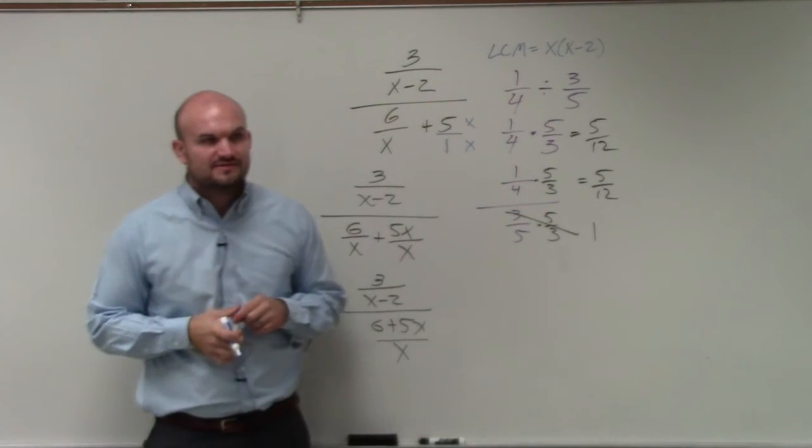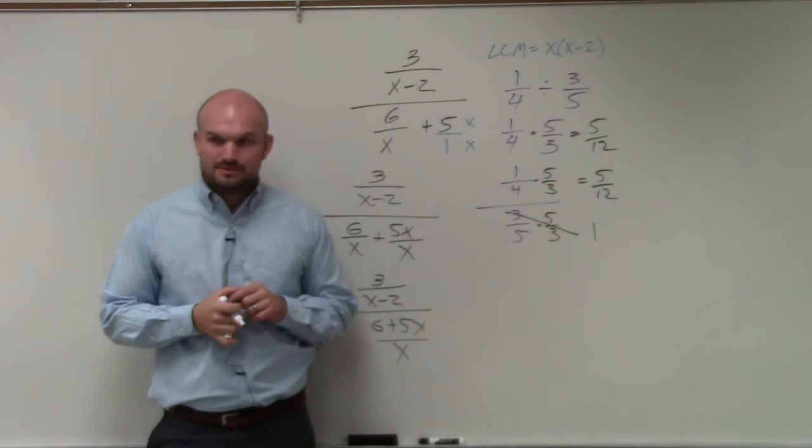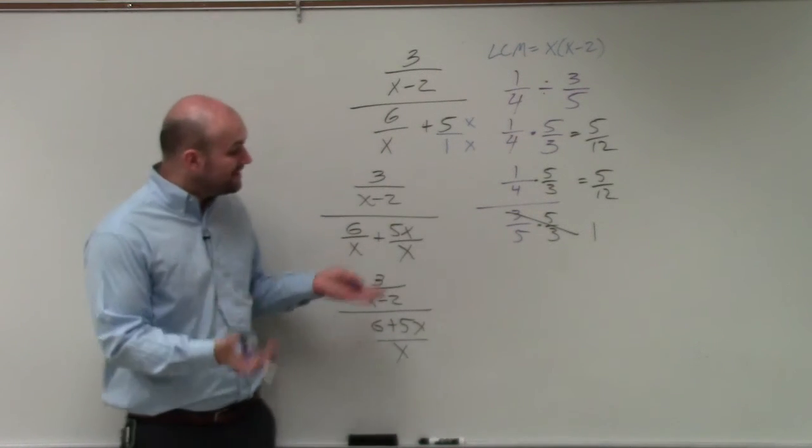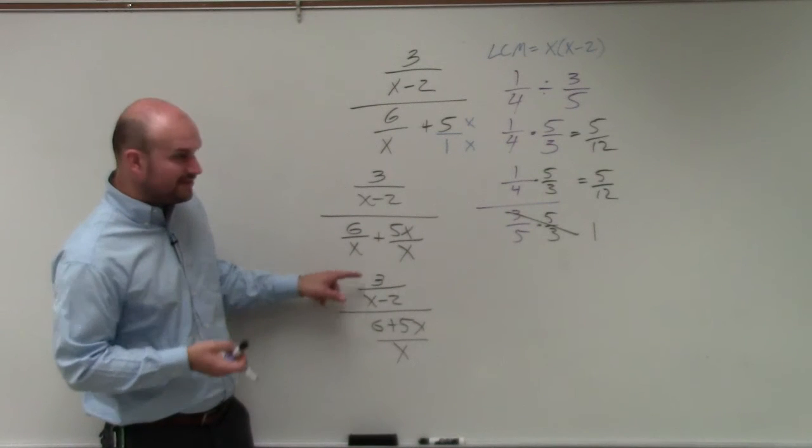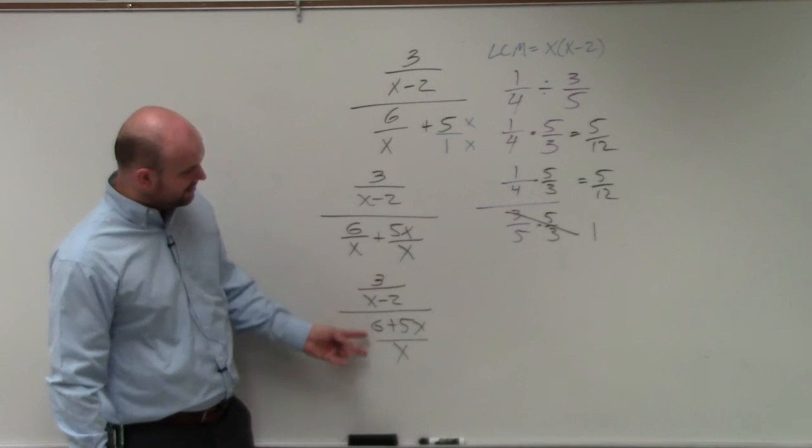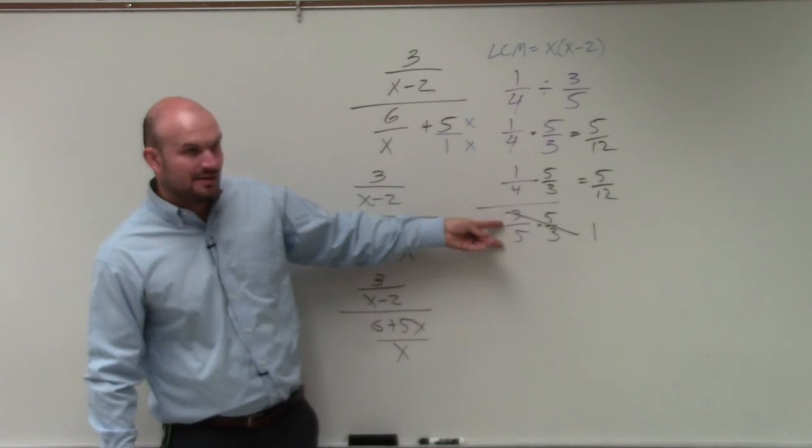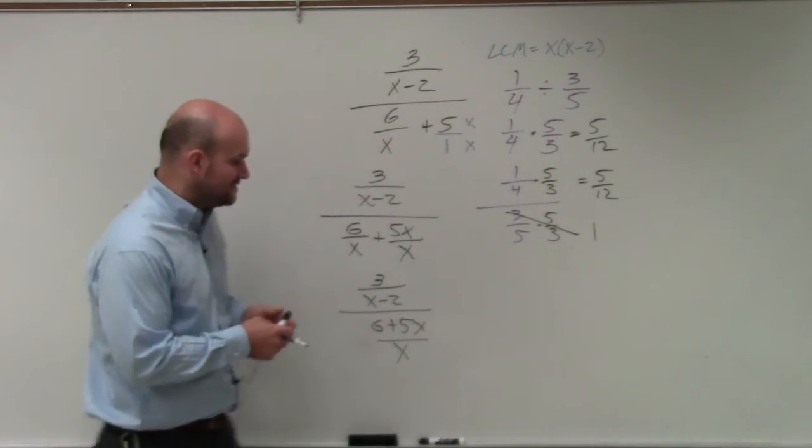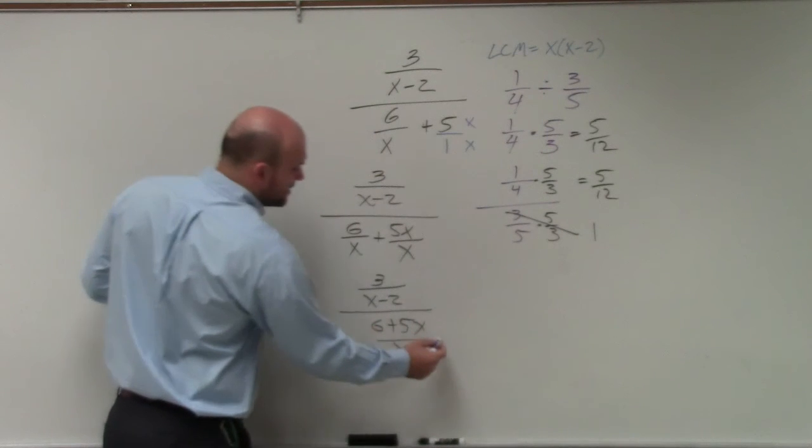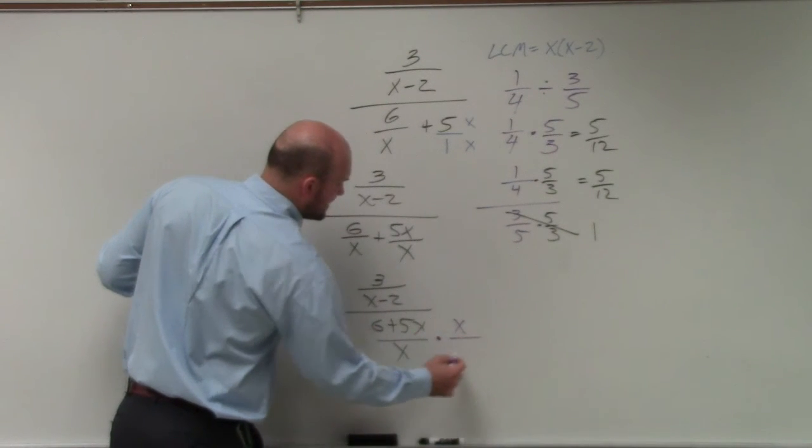Okay? So does everybody kind of see that? So in this case, you guys can see this looks crazy, but in reality, all it is is a fraction divided by another fraction. It's the same thing, fraction divided by a fraction. So all we need to do is just multiply by the reciprocal of our denominator in the top and the bottom.